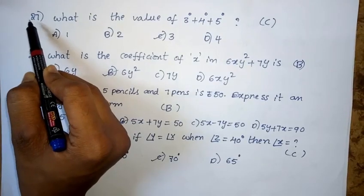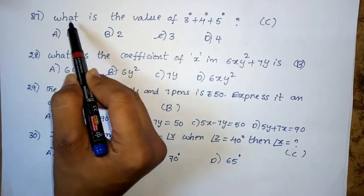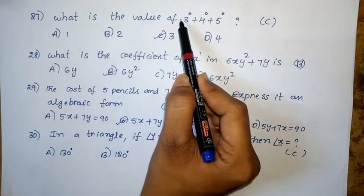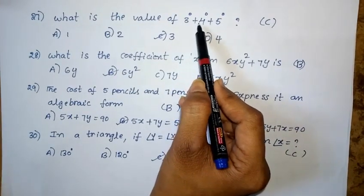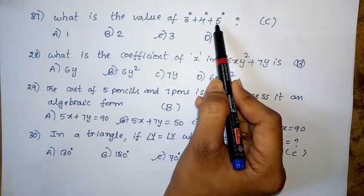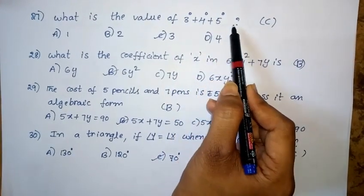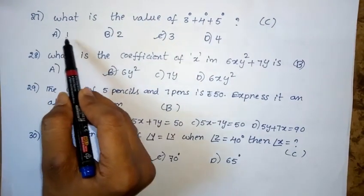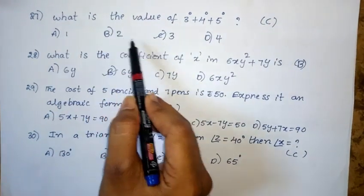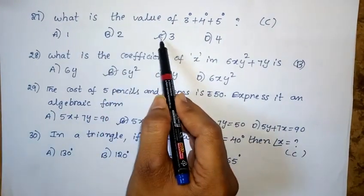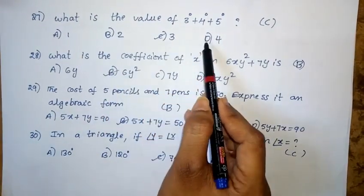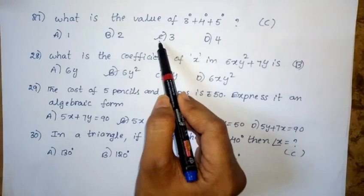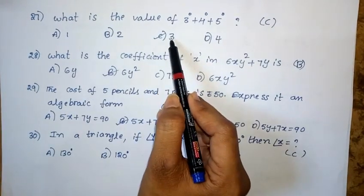Twenty-seventh question: What is the value of 3 power 0 plus 4 power 0 plus 5 power 0? Option A: 1. Option B: 2. Option C: 3. Option D: 4. The right answer is option C — 3.